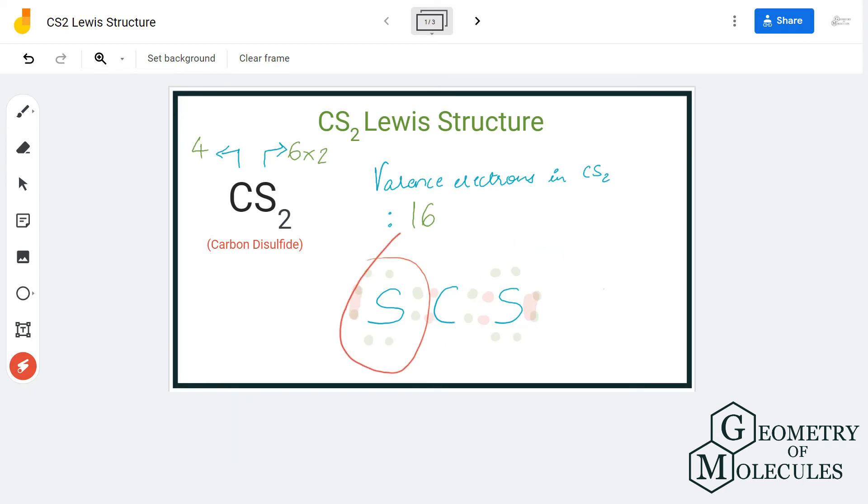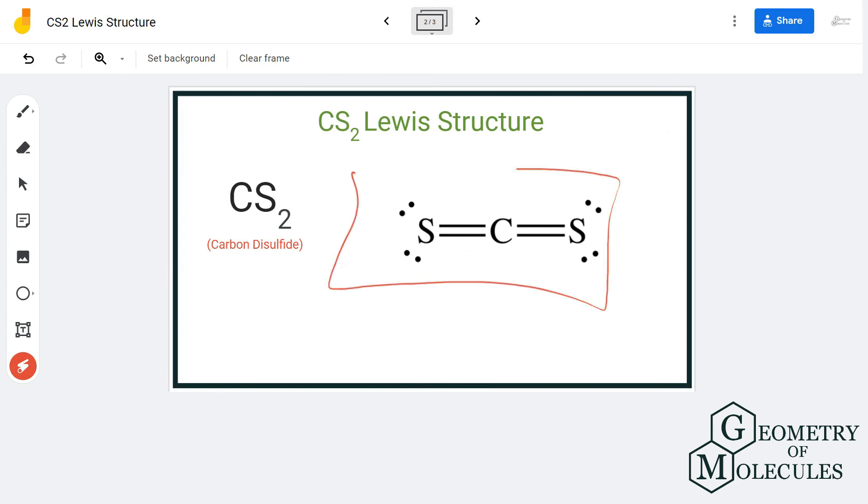Carbon has eight valence electrons, so octets for all three atoms are now complete. This is the Lewis structure for carbon disulfide, in which the octets of all the three atoms are complete.